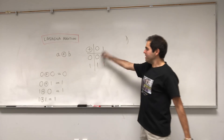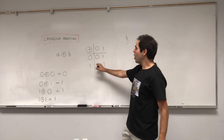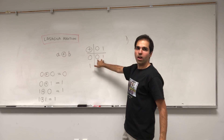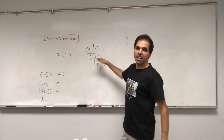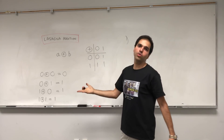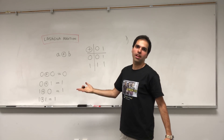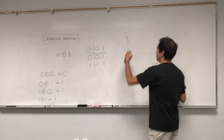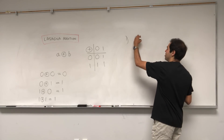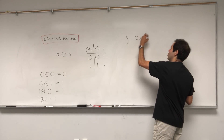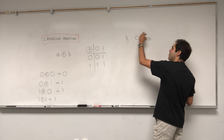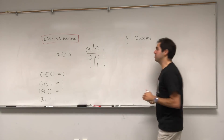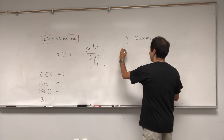First of all, it's what's called closed. If you start with 0 or 1 lasagna and add it to 0 or 1 lasagna, you still get 0 or 1 lasagnas. So it's closed — if A and B are in your set, then A plus B is in your set.